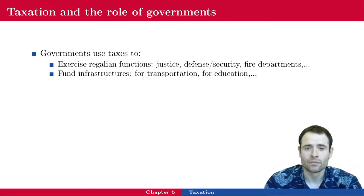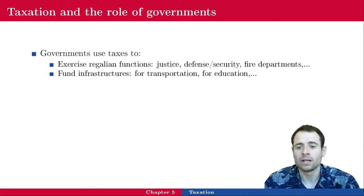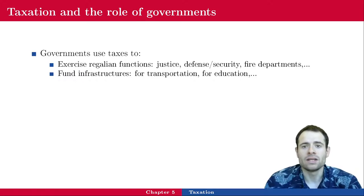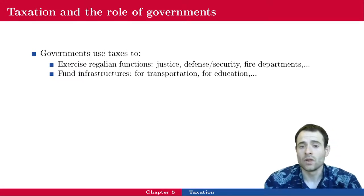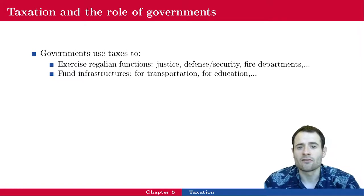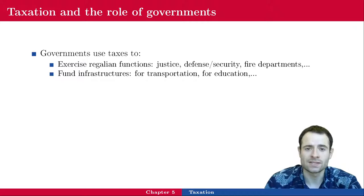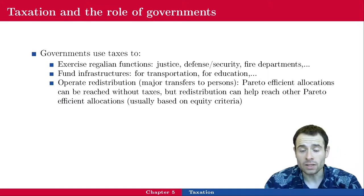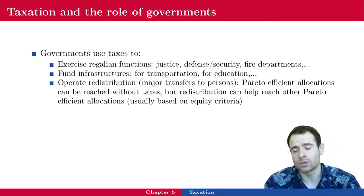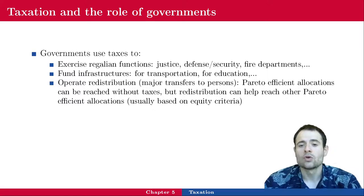Governments also use taxes to fund infrastructure — they build roads, bridges, maintain the railroad network, sometimes build public schools or hospitals. They also fund public goods like lakes, beaches, and green spaces in urban areas. Finally, governments use tax revenue to operate redistribution in the form of major transfers to persons.